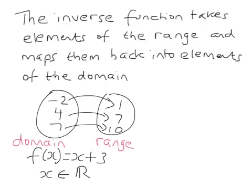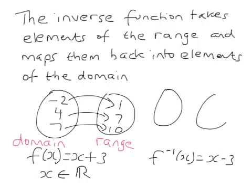So if the function is f(x) equals x plus 3, then the inverse function is obviously going to be f-inverse of x equals x minus 3. So 1, 7, 10 becomes minus 2, 4, and 7.